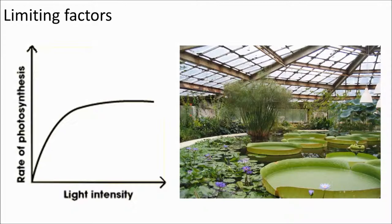For example, a plant might have plenty of CO₂ and warmth, but if that plant is in the shade, the rate of reaction will level off, as shown in this graph. If you want to increase the rate of photosynthesis, you'll have to give it more of what it's lacking — in this case, light. Greenhouses are designed to give plenty of light and warmth to a plant, but some plant producers will also pump CO₂ into their greenhouses to ensure really rapid growth.